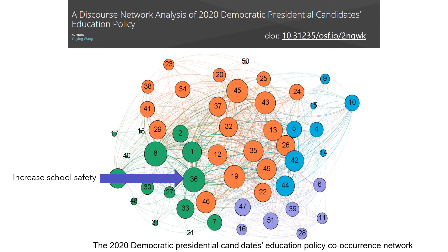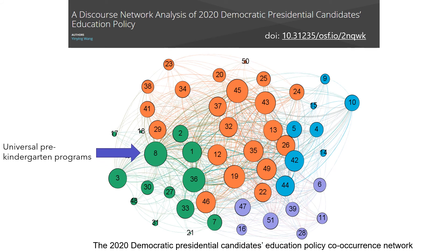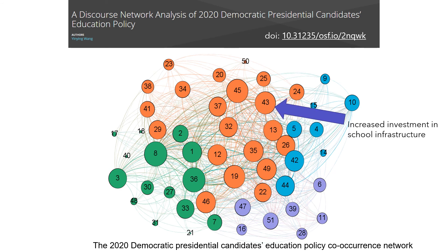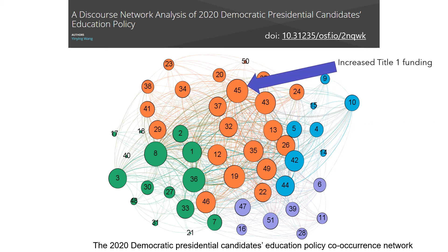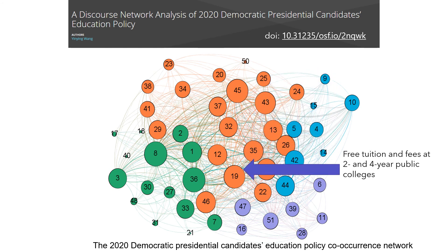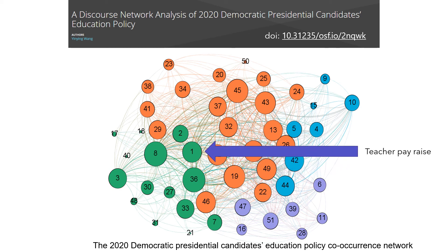In the 2020 Democratic presidential candidates' education co-occurrence network, the policy proposals with high degree centrality include: Policy 36, increased school safety; Policy 8, universal pre-kindergarten programs; Policy 43, increased investment in school infrastructure; Policy 45, increased Title I funding; Policy 19, free tuition and fees at 2 and 4-year public colleges; and Policy 1, teacher pay raise.